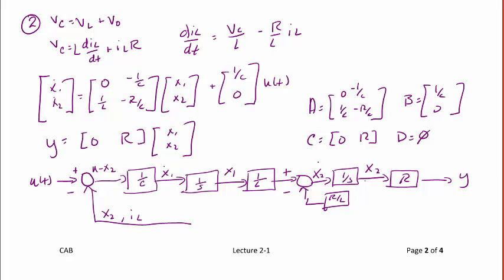In order to create x2 dot, here, this has to be fed back through R over L so that we get x2 dot is equal to 1 over L x1 minus R over L x2. And we know that this line here is also x2. So it comes from here.